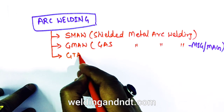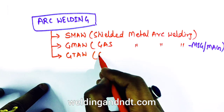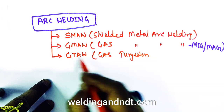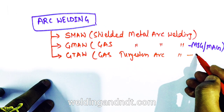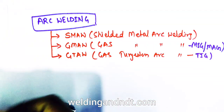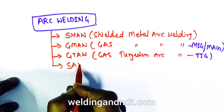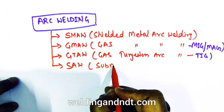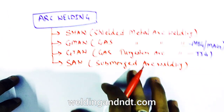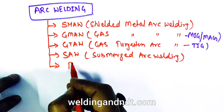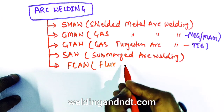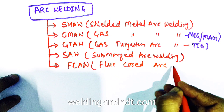The third arc welding process is GTAW — gas tungsten arc welding, also called TIG welding. Then we have submerged arc welding. Next is FCAW — flux cored arc welding, which is very similar to GMAW.